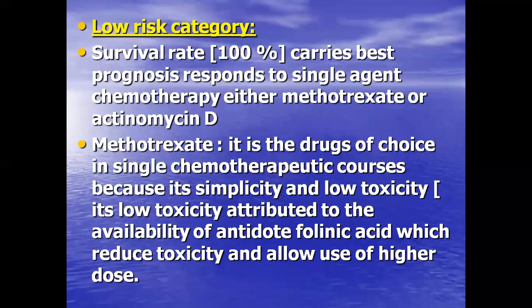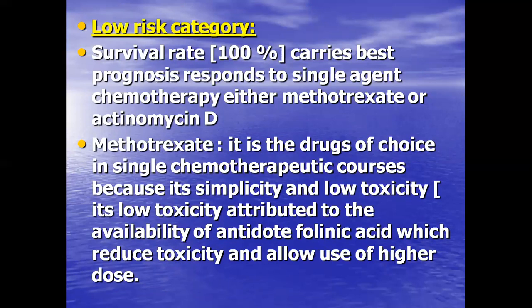For the low risk category, the survivor rate is 100%. These carry the best prognosis and respond to single-agent chemotherapy — either methotrexate or actinomycin D. Methotrexate is the drug of choice because of its simplicity and low toxicity. Its low toxicity is attributed to the availability of an antidote — folinic acid — which reduces toxicity and allows use of higher doses.